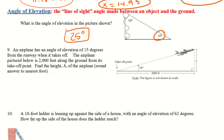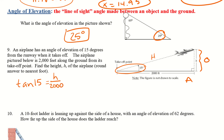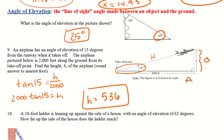Number 9: an airplane has an angle of elevation of 15 degrees from the runway when it takes off. The airplane is 2,000 feet along the ground from its takeoff point — find the height H, rounded to the nearest foot. Here's our angle of elevation; we have hypotenuse, opposite, and adjacent, so we'll use tangent: tan(15) = H over 2,000. Multiply both sides by 2,000, plug into the calculator, and the height is 536 feet.